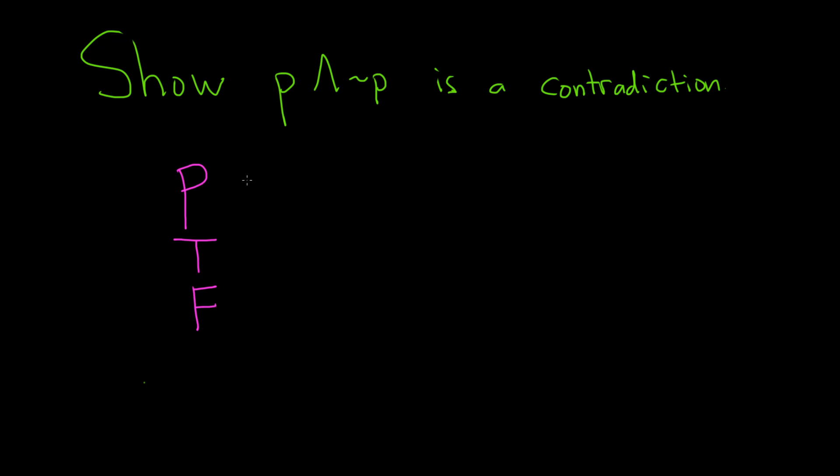Next we'll list the truth values for the negation of p. So the negation of p, which is read not p, is the opposite truth value of whatever p has.